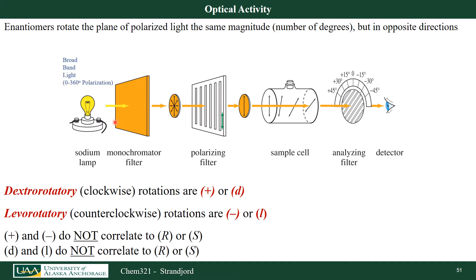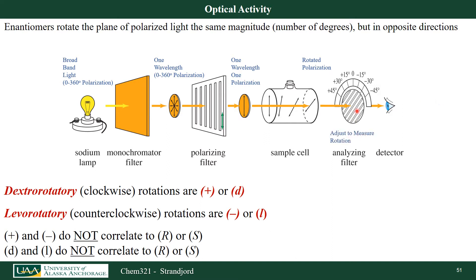Here's my plane polarized light with 0 to 360 degree polarization. After a monochromator, I get one wavelength and one polarization. My sample rotates it either clockwise or counterclockwise by a certain number of degrees, depending on the molecule's concentration and the path length of my sample. I use my second polarizer to rotate it to measure maximum intensity of light coming out — that's my measured rotation.